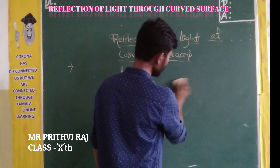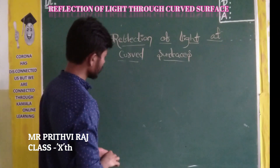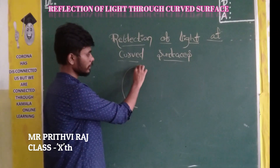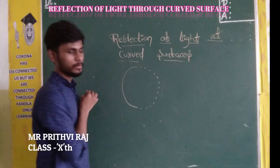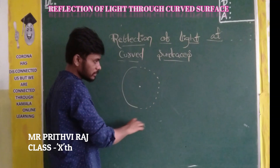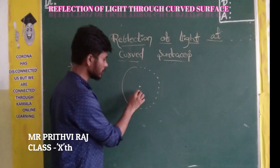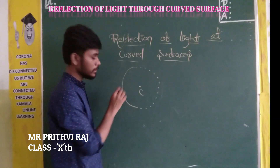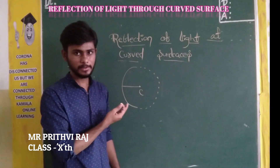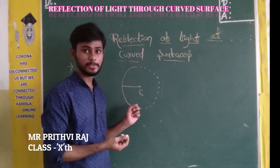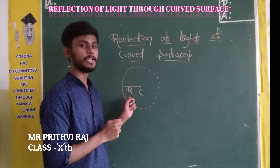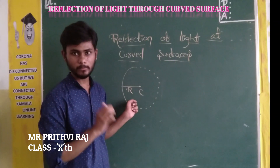The curved mirror is part of a circle and must have a center. The center of this virtual circle is called the center of curvature. From the center of curvature we draw one line to the mirror surface — this is called the radius, or radius of curvature, denoted capital R.